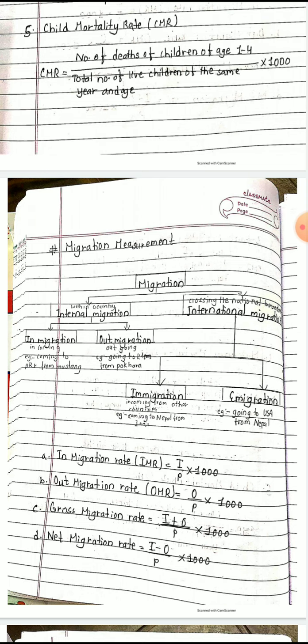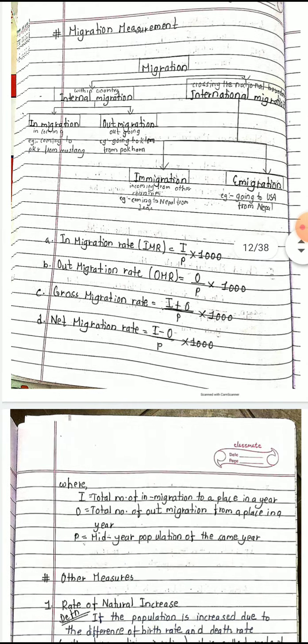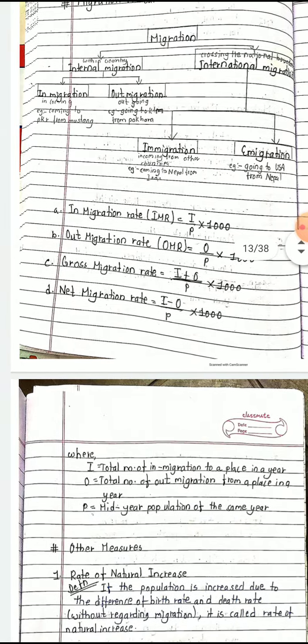Migration rates are calculated as follows: in-migration rate = I/P × 1000; out-migration rate = O/P × 1000; gross migration rate = (I + O)/P × 1000; net migration rate = (I − O)/P × 1000. Here, I = total number of in-migrants, O = total number of out-migrants, and P = mid-year population. Many students get confused between gross and net migration.